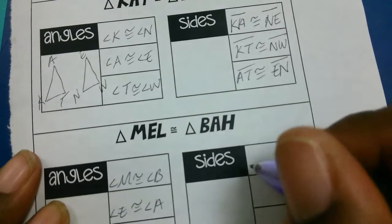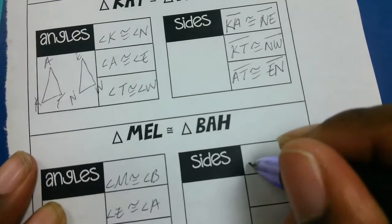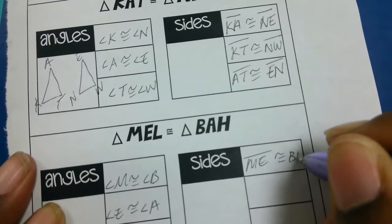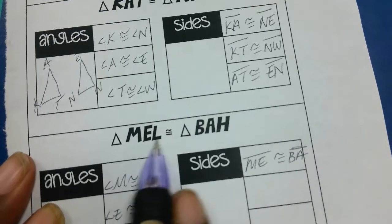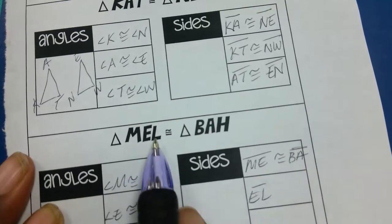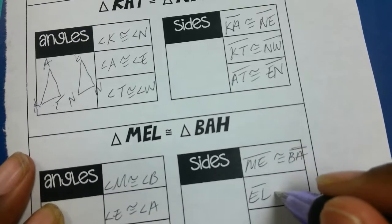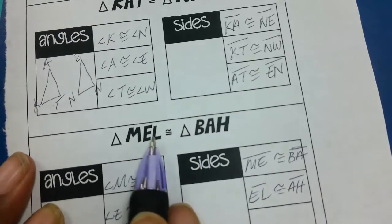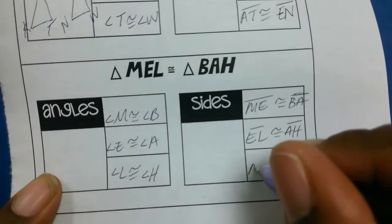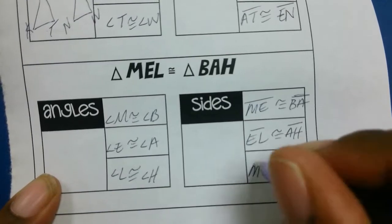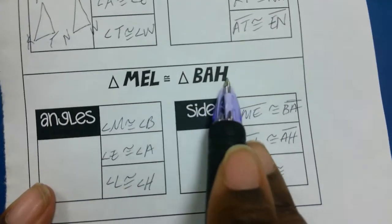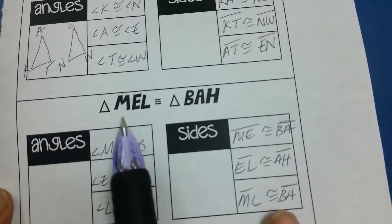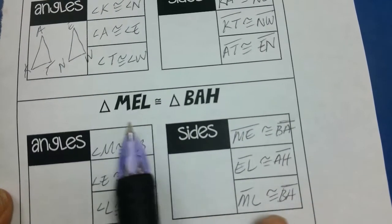I can do the same thing with sides. ME, which is these first two letters, so side ME has to be congruent to these first two letters BA. EL, which is the last two, will be congruent to AH because those are in the same spots. Then I can say ML, the first and the last, is congruent to BH, first and the last.